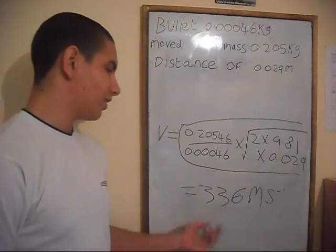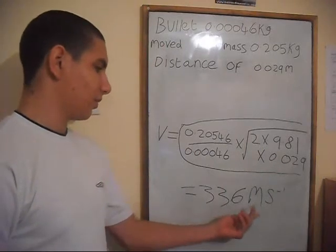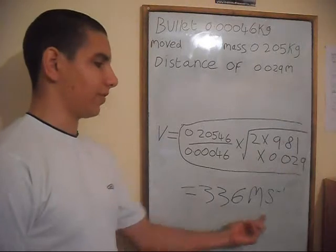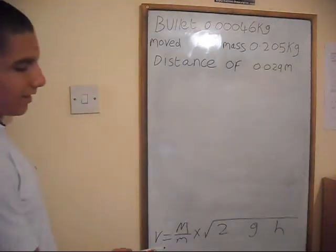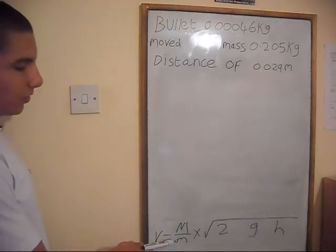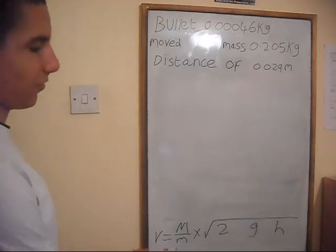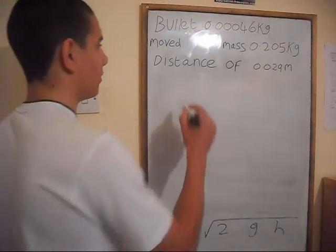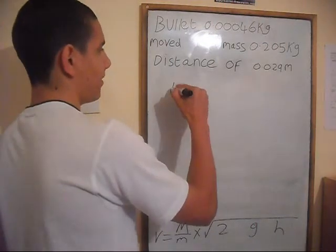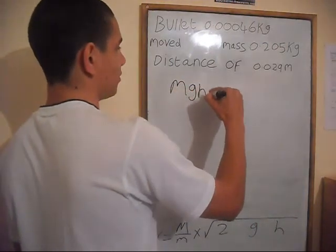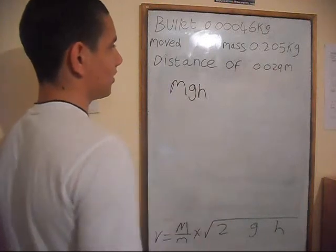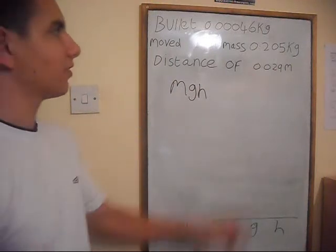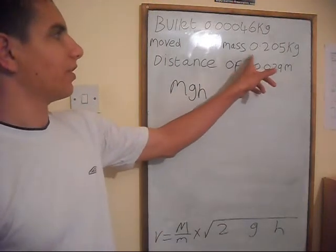it gives the answer 336 metres per second — the speed the bullet was travelling when it left the barrel of the gun. To understand the equation we used, we know that MGH is the potential energy of this mass.